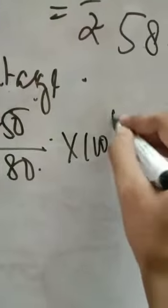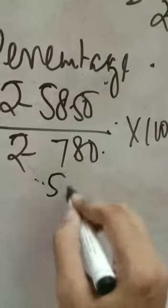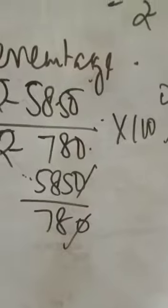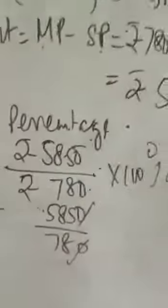By MP into hundred percent, same here also. That means 58.50 divided by 780. After finding out the value you can find discount percentage.